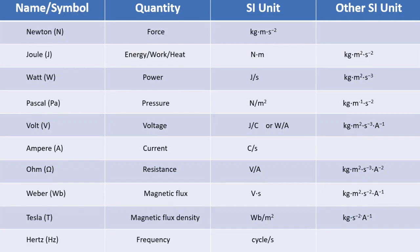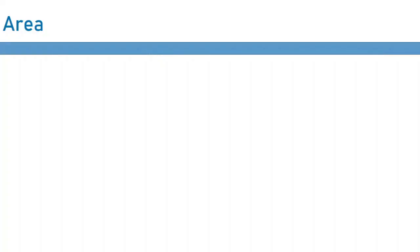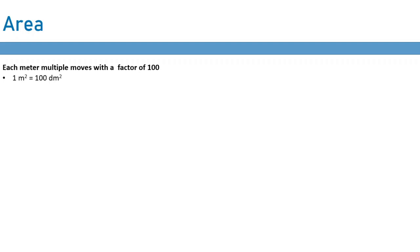Before the practice problem, I want to quickly talk about converting between areas, because this is something many students find difficult. For instance, if you wanted to convert one meter squared into centimeters squared or micrometers squared. When converting areas through multiples or submultiples, for each step you either divide or multiply by a factor of 100. So moving one submultiple down means multiplying by 100, and moving one multiple up means dividing by 100. This will become clearer with an example.